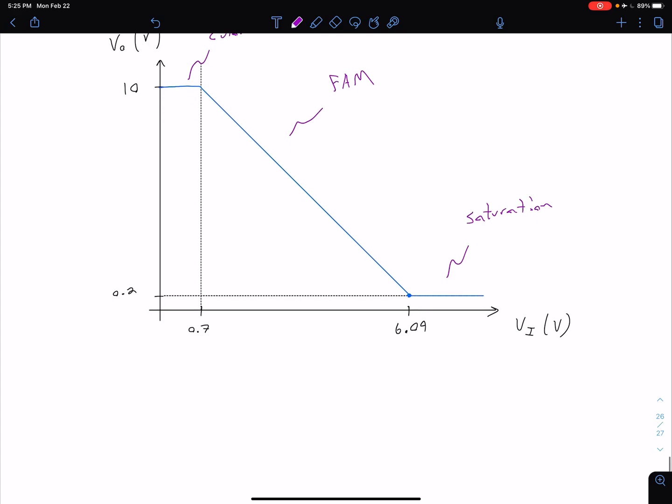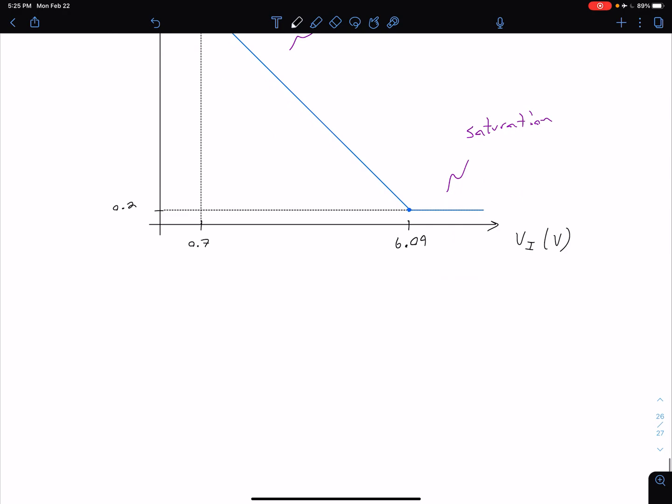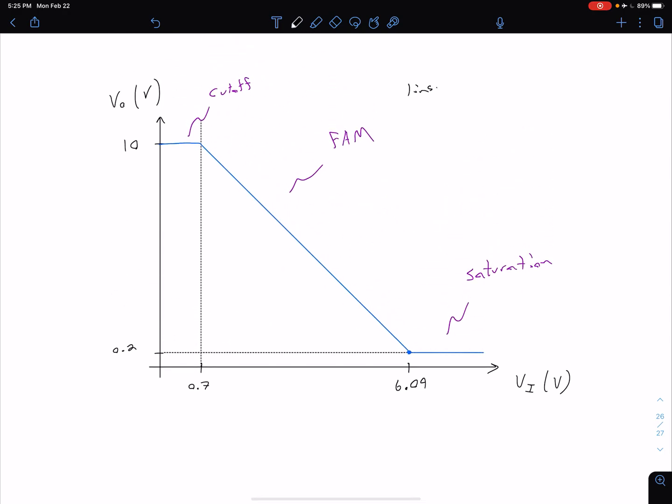This linear plot for our forward active mode is a good first order approximation. If you were to go and simulate this in a computer you would see we actually have some curvature in there. But depending on how much accuracy you need this linear plot might be good enough.